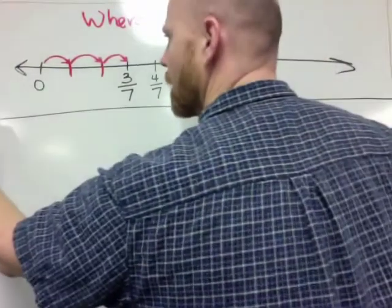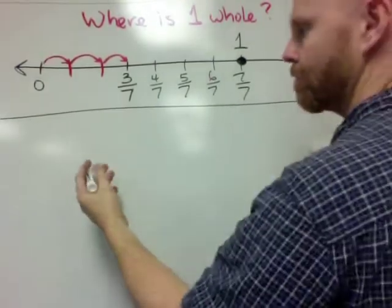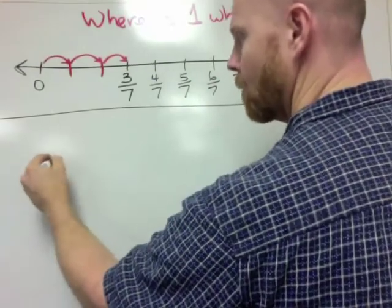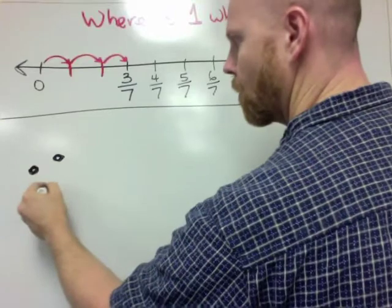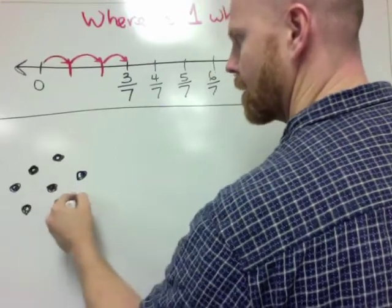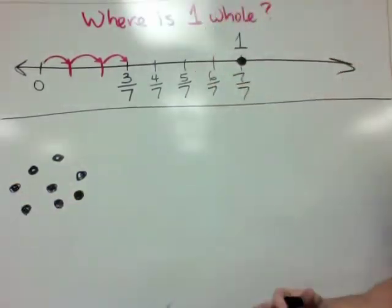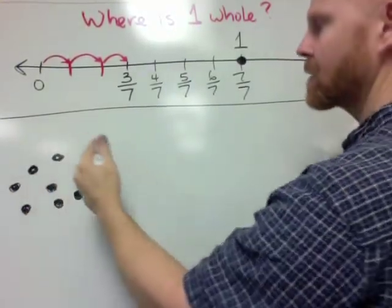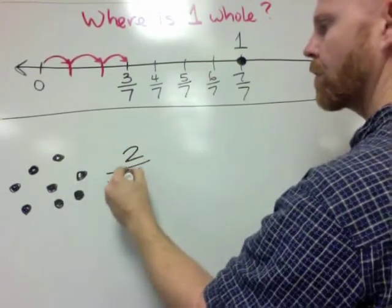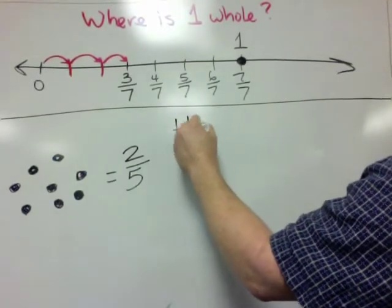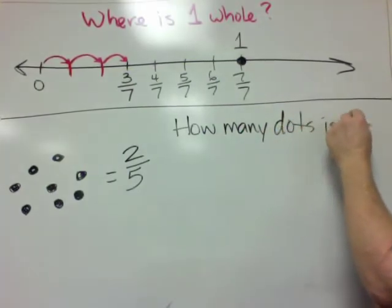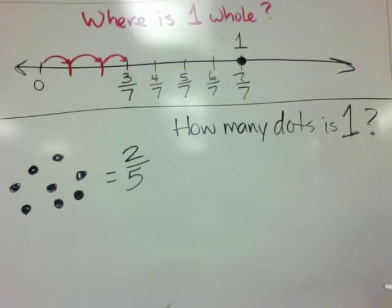In a similar kind of question, let's say we've got a bunch of dots. This is called the set model. So we've got one, two, three, four, five, six, seven, eight dots. And we are told that these eight dots are equal to two-fifths. And we want to know how many dots is one whole.